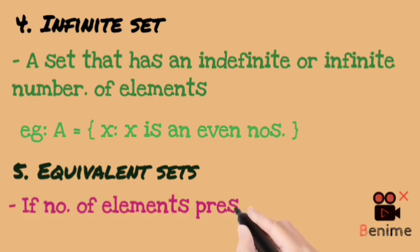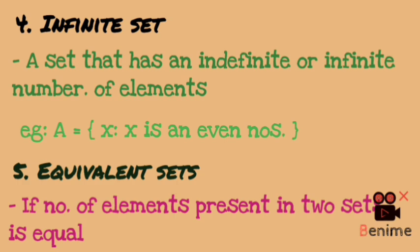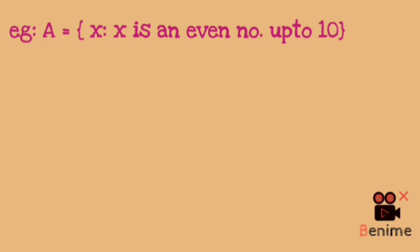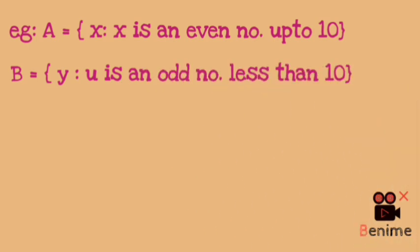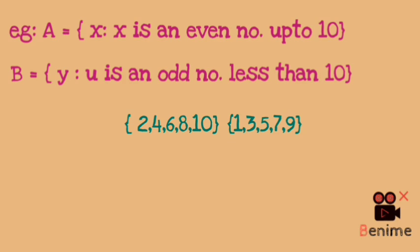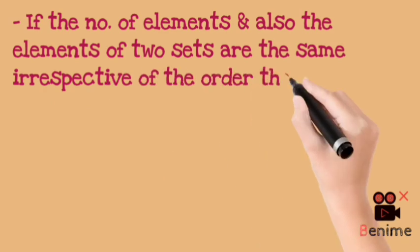Next, we have equivalent sets. Equivalent sets have the same number of elements (same cardinality). For example, A = {2, 4, 6, 8, 10} — even numbers up to 10 — and B = {1, 3, 5, 7, 9} — odd numbers less than 10. Both sets have 5 elements each, so they are equivalent sets. Equal sets go further — not only must the number of elements be the same, but the elements themselves must also be the same (order does not matter).